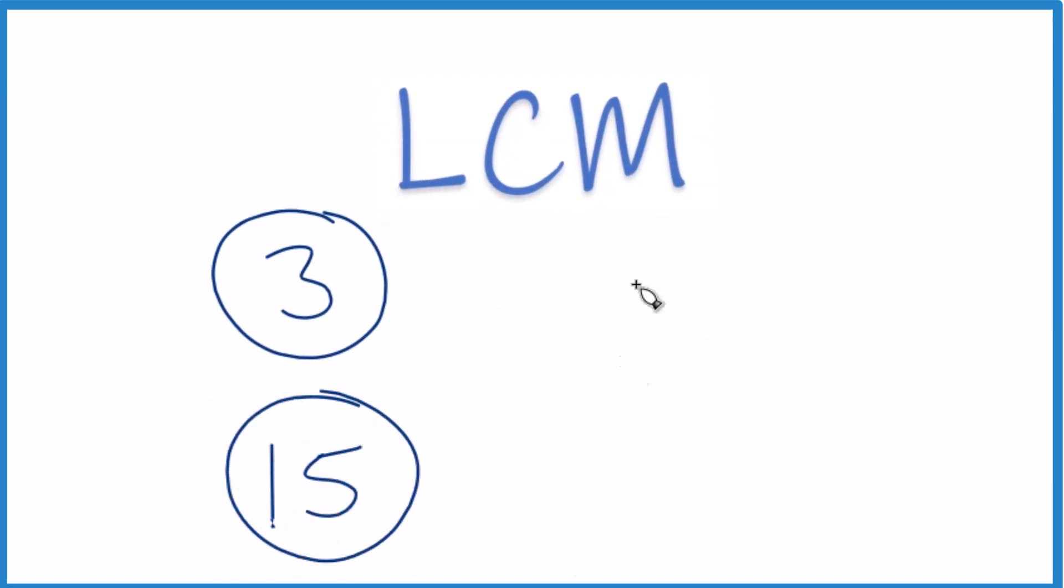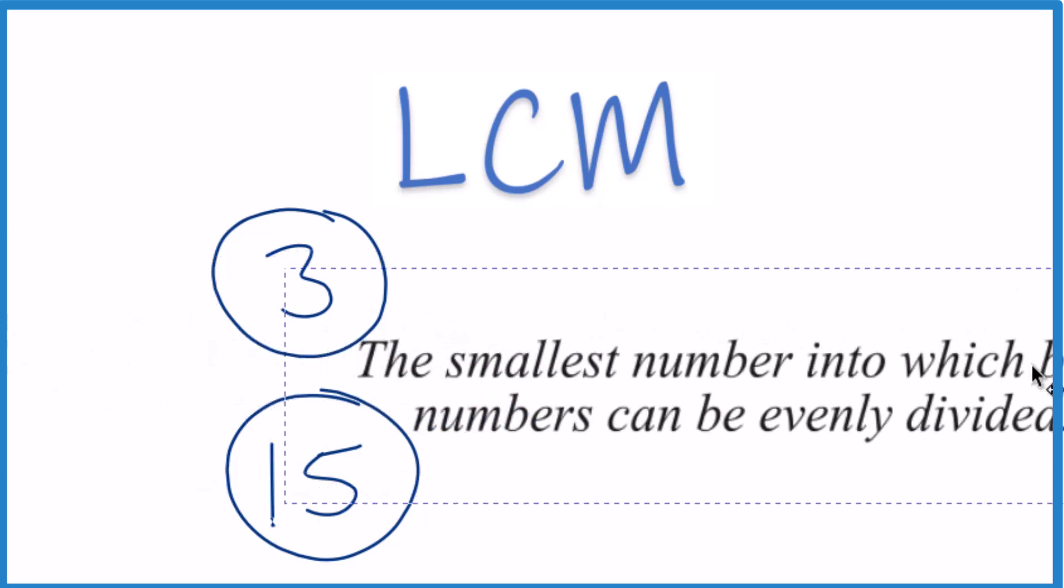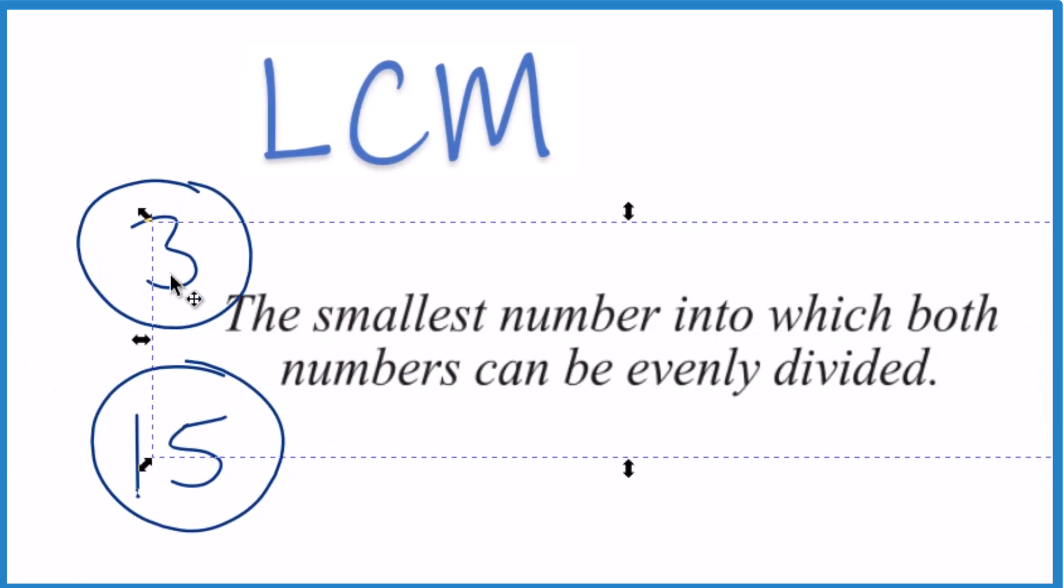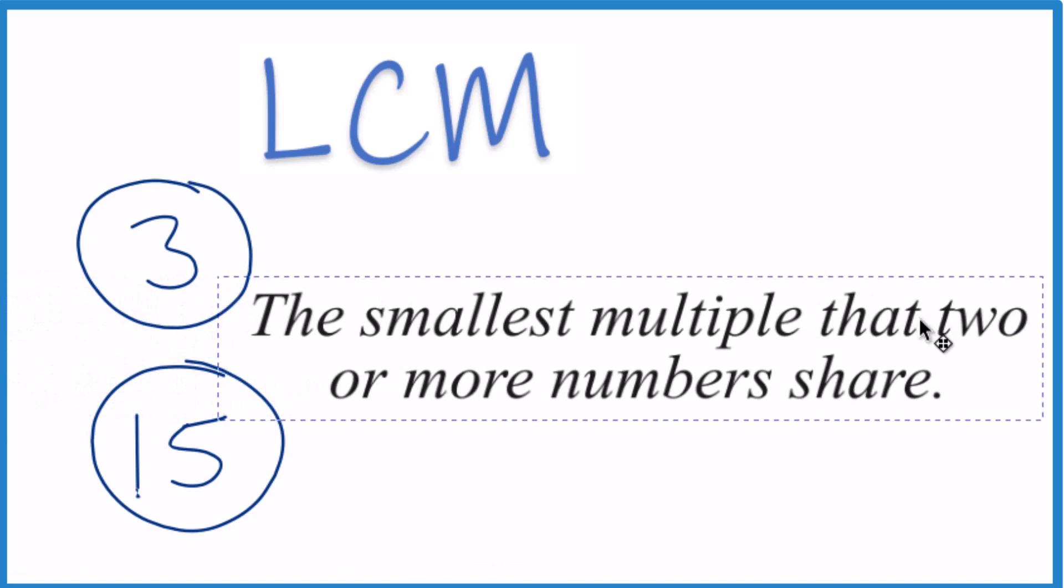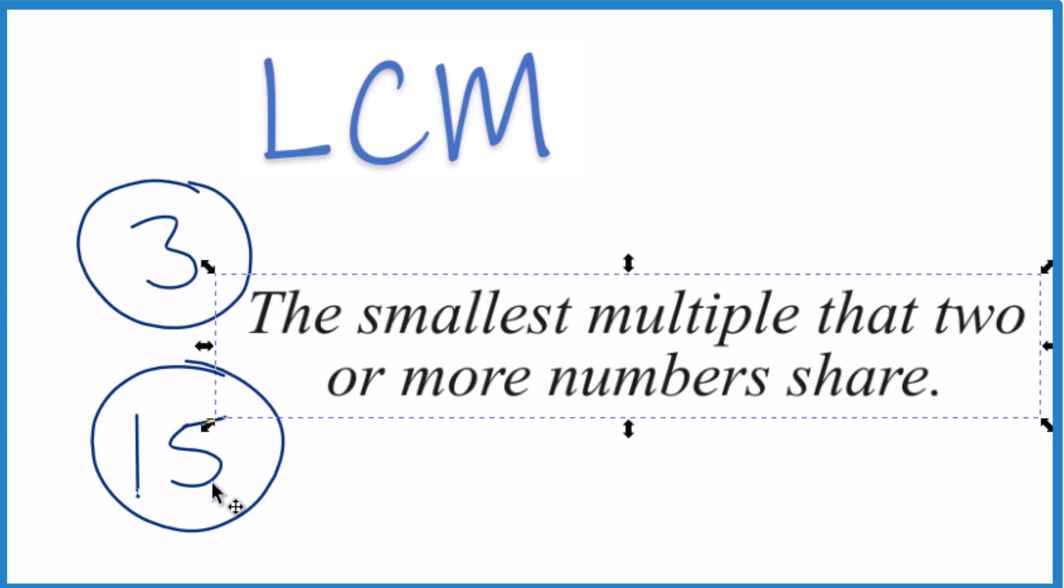So when we're talking about the LCM, the least common multiple, you could think of it as the smallest number which both of these would go into evenly, both 3 and 15. Or you could think about it as the smallest multiple that both of these numbers share.